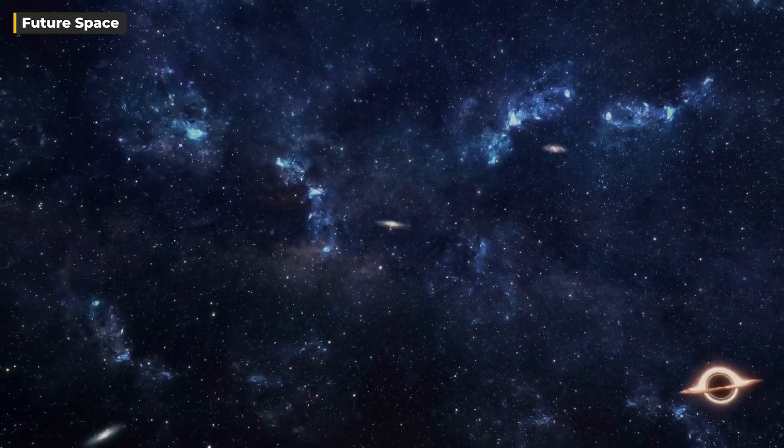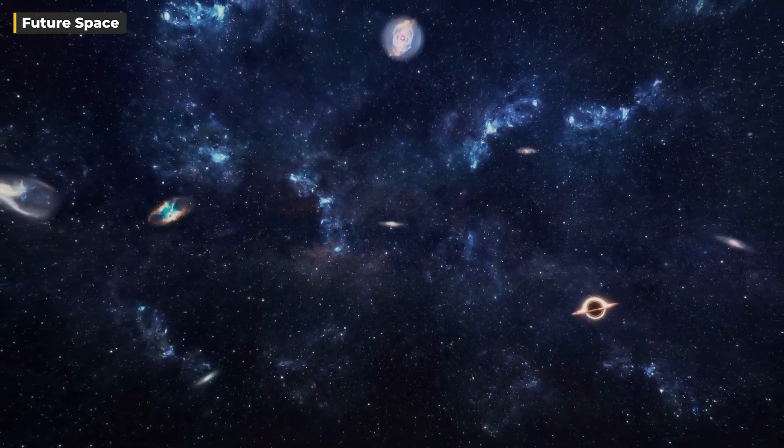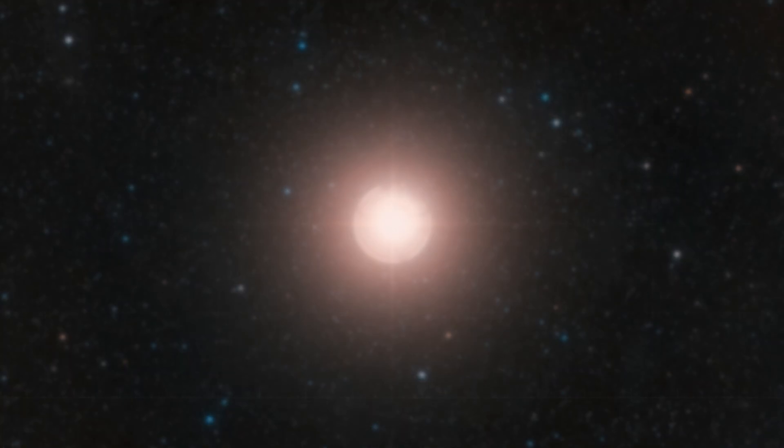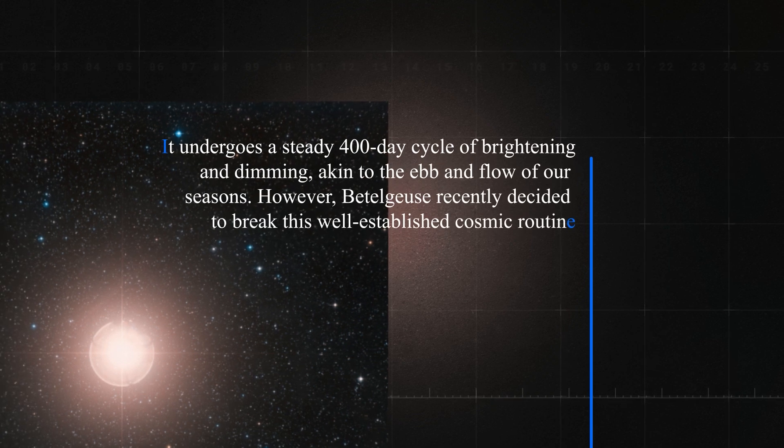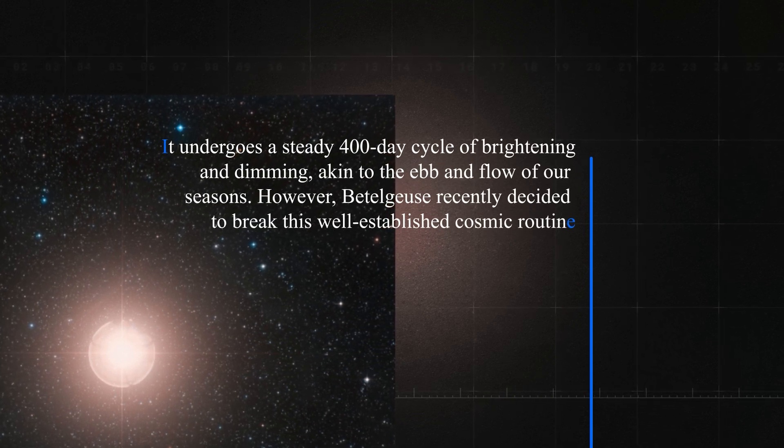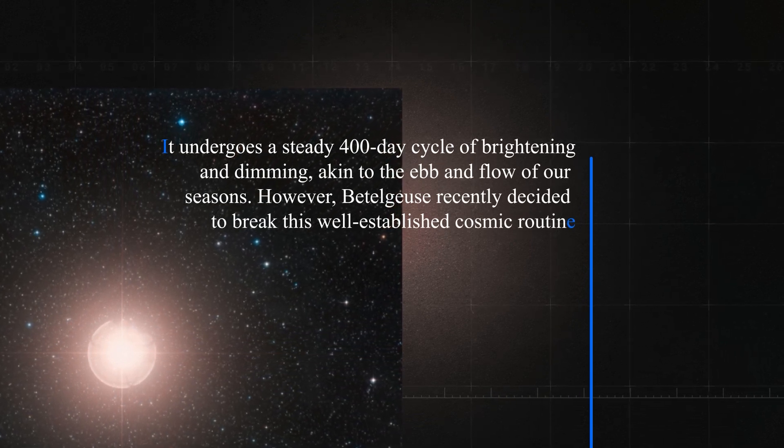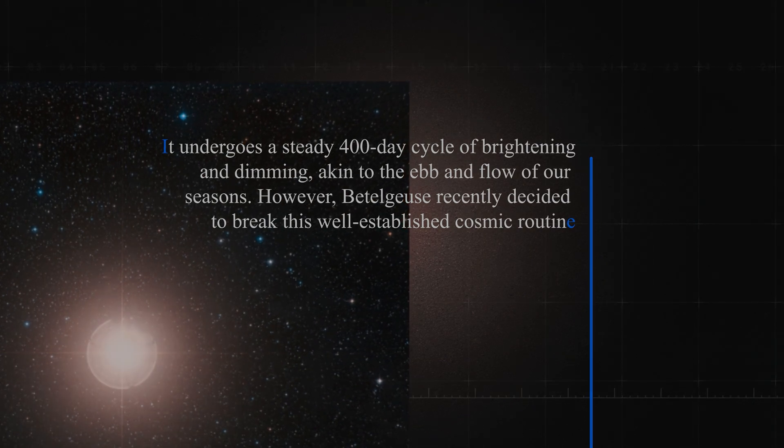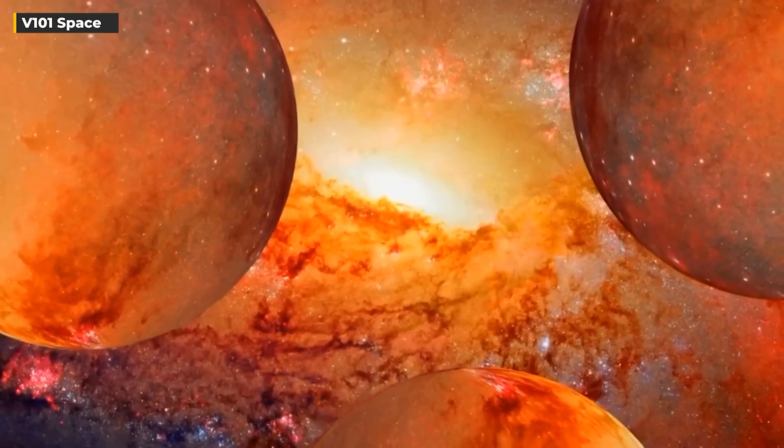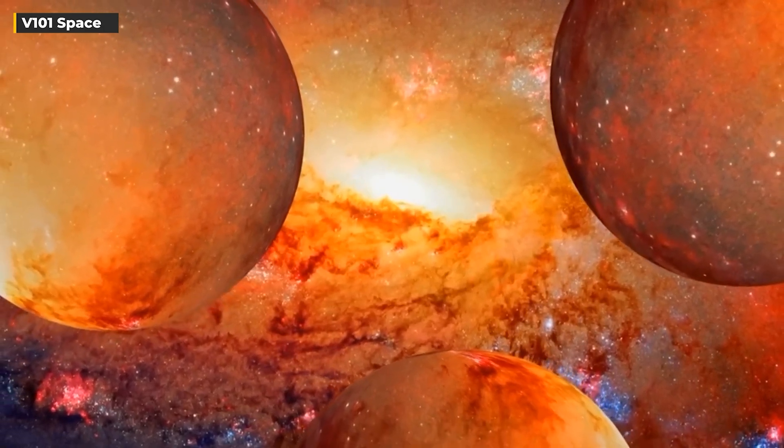Normally, it follows a rather predictable pattern, much like the changing seasons we experience. It undergoes a steady 400-day cycle of brightening and dimming, akin to the ebb and flow of our seasons. However, Betelgeuse recently decided to break this well-established cosmic routine, demonstrating a behavior that surprised and intrigued astronomers around the world.